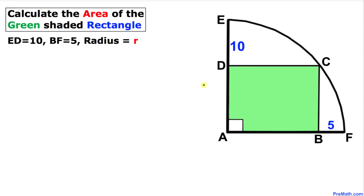Welcome to PreMath. In this video tutorial we have got this green shaded rectangle ABCD that is inscribed in this quarter of a circle as you can see in this figure. Moreover, the distance ED is 10 and the distance BF is 5 units, and now we are going to calculate the area of this green shaded rectangle ABCD.